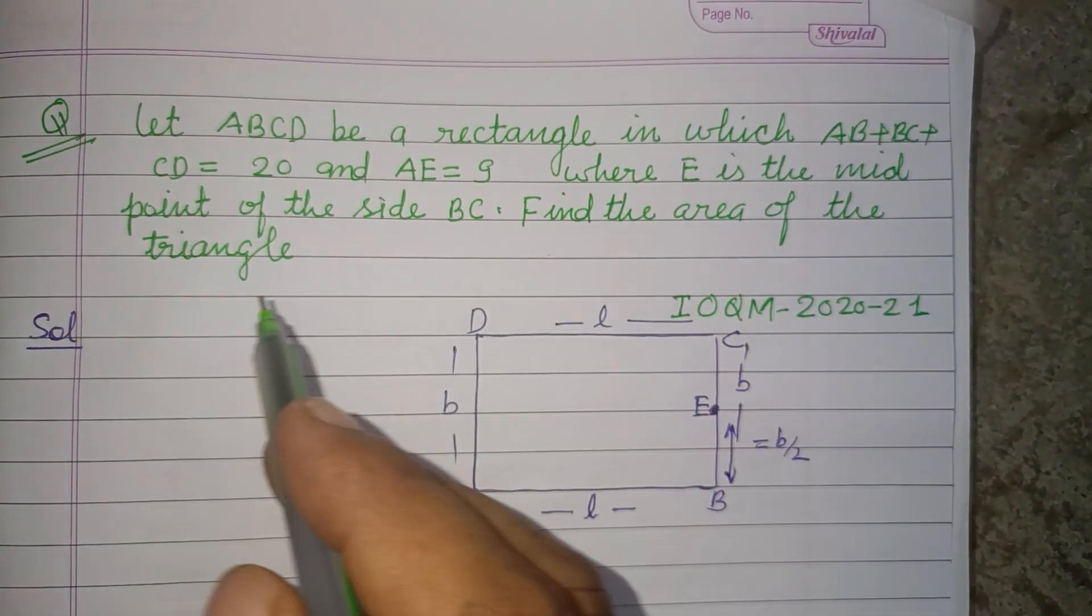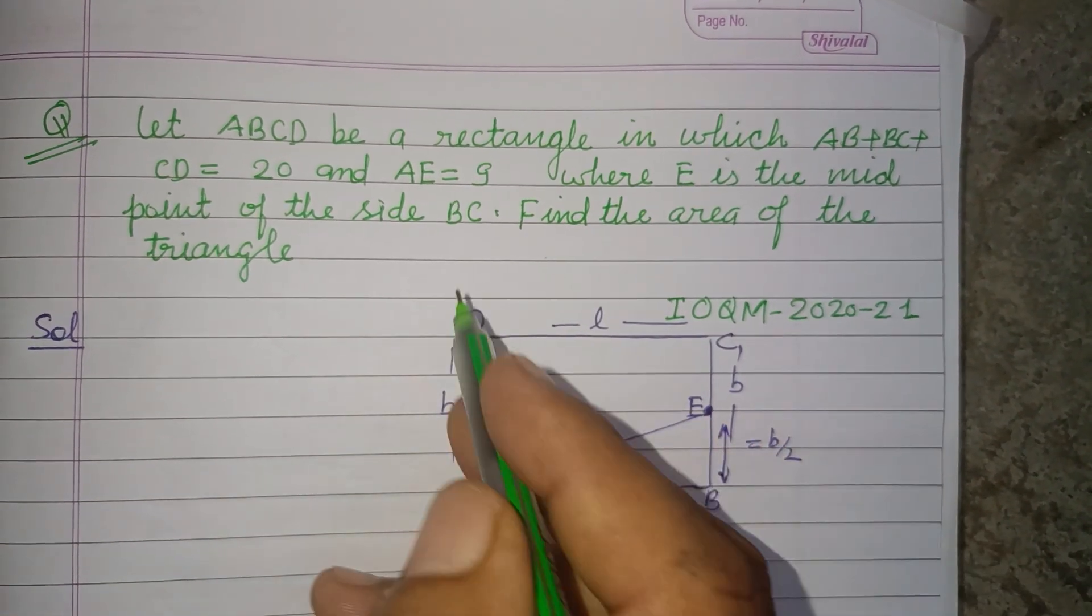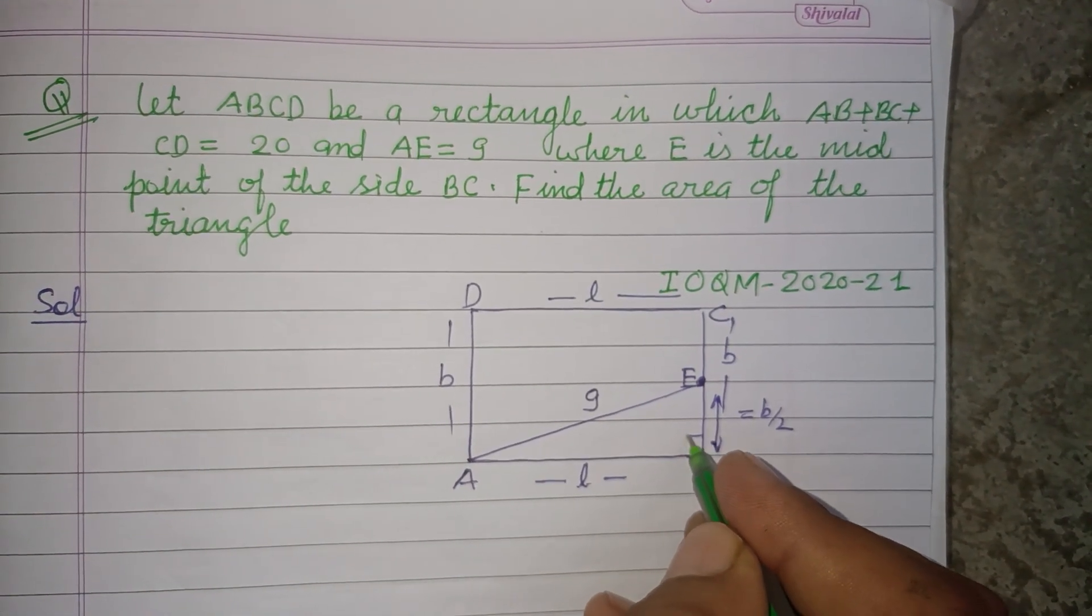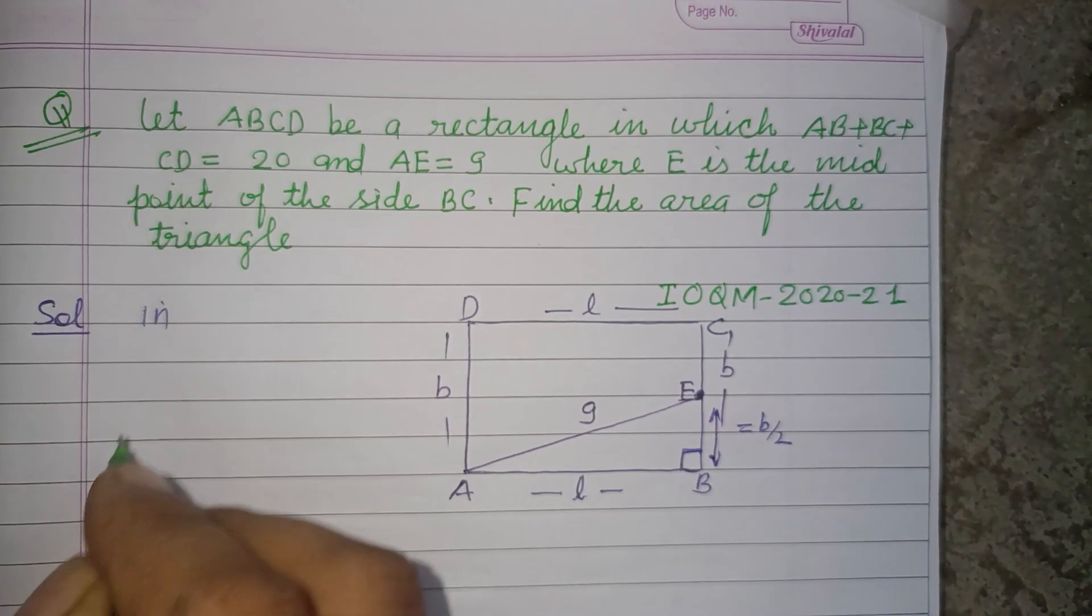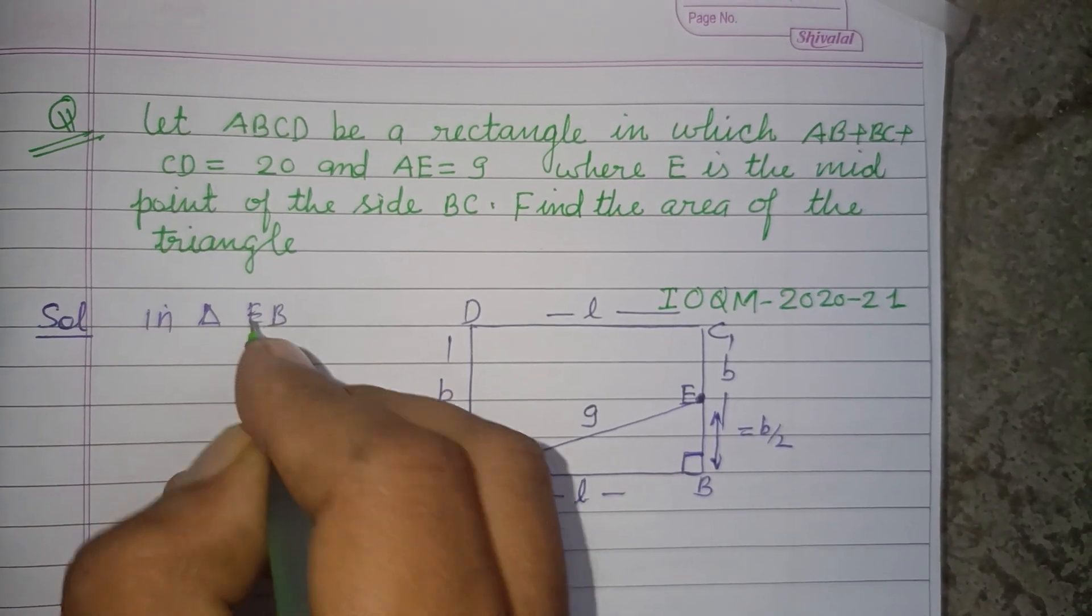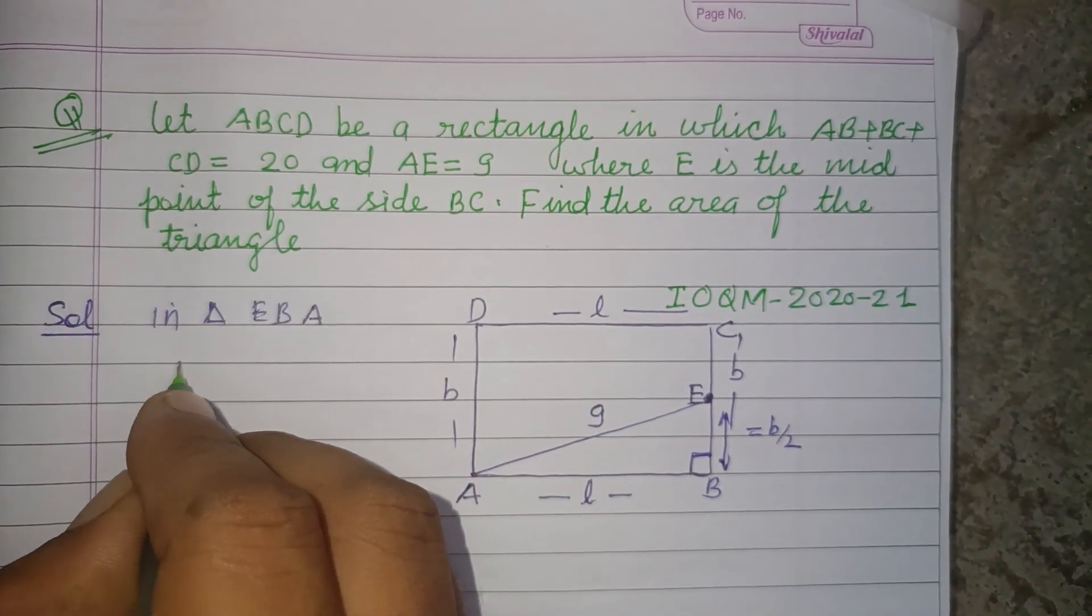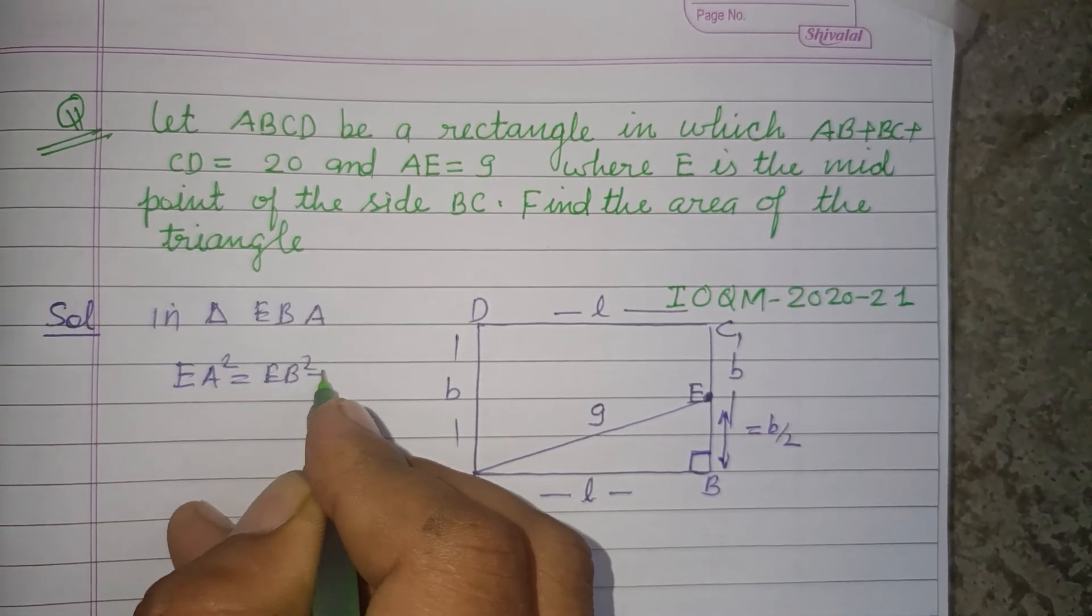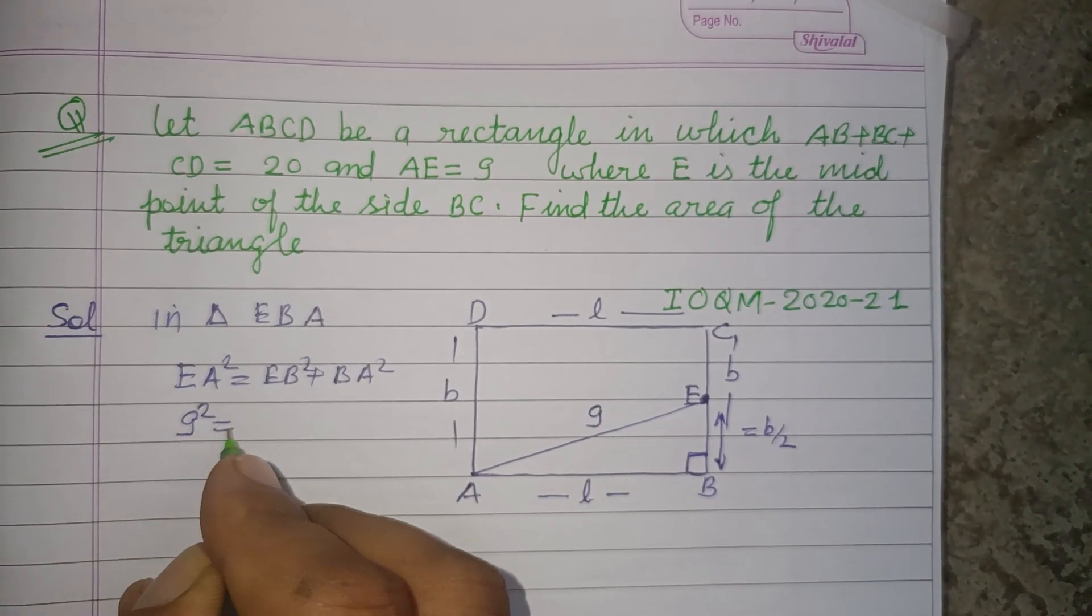What is the area of the triangle? First we draw AE which is given to us as 9. You know that each angle of a rectangle is 90 degrees, so in right angle triangle EBA, EA² equals EB² plus BA². So 9² equals...